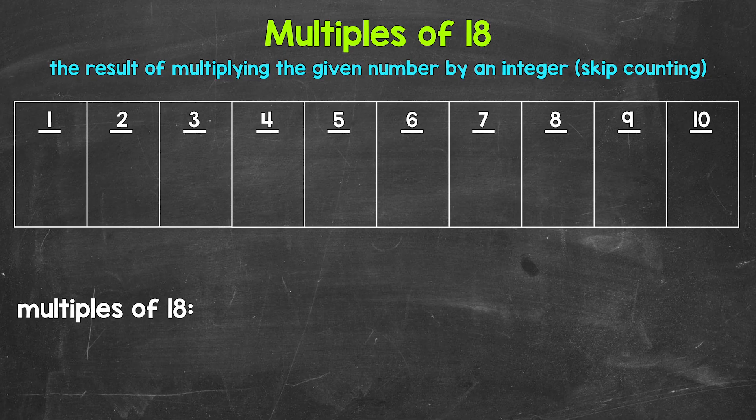So 1 times 18, 2 times 18, 3 times 18, so on and so forth. Another way to think about multiples is to skip count — all of the numbers something is going to hit when counting up by that number, those are all going to be multiples.